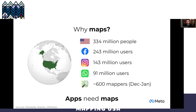We're talking about Mapping USA. There are 334 million people in the country. On Facebook, you have 243 million users; Instagram, 143 million; 91 million on WhatsApp — all just in the U.S. And from December to January stats, something around 600 mappers are active on average every day in the U.S. It's really interesting to think of that funnel: a small group of mappers is building this core data set that reaches potentially all these people, not just in our apps but across other apps in the U.S. too.